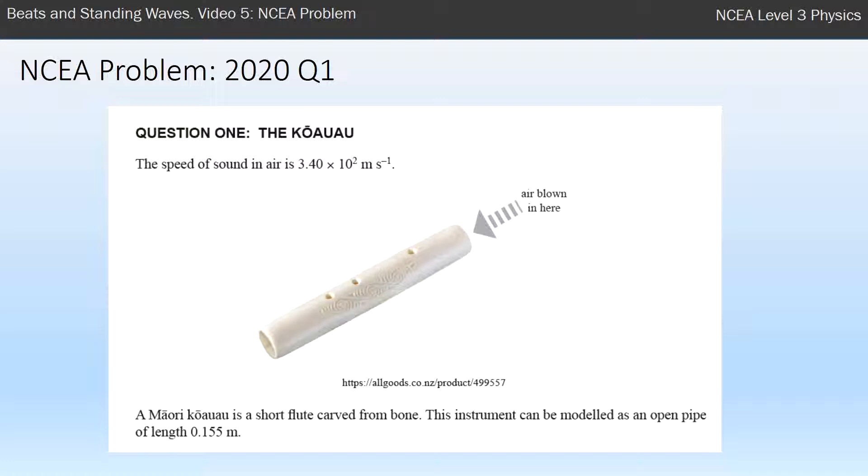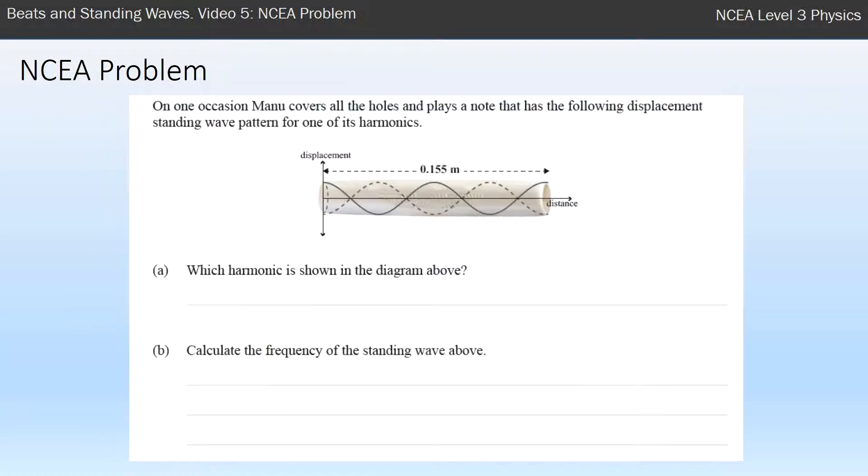They give us the speed of sound in air as 3.4 × 10², which is 340 meters per second. The reason they write it like that is to clearly show they're giving you a number to three significant figures. If they gave you 340, you wouldn't be sure if that had been rounded from 339, but 3.40 is exact to those three significant figures.